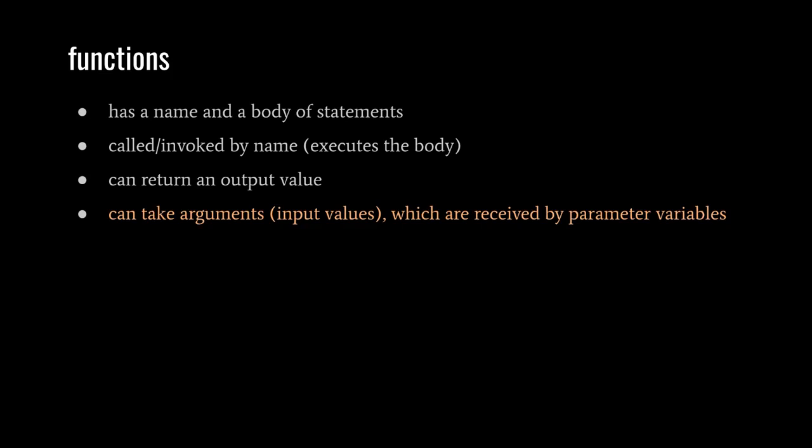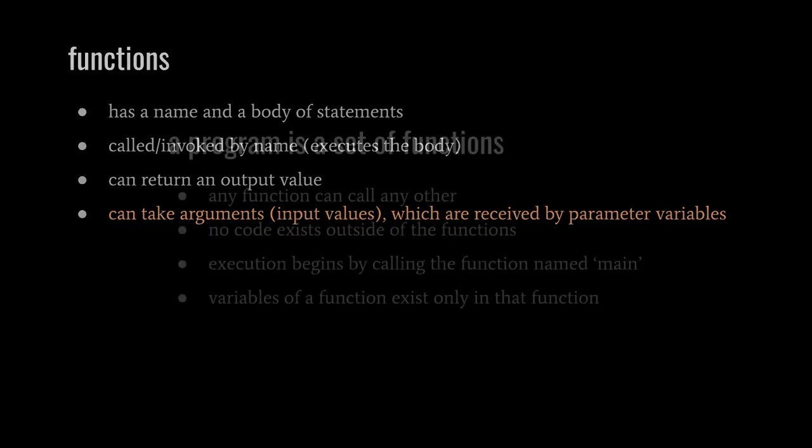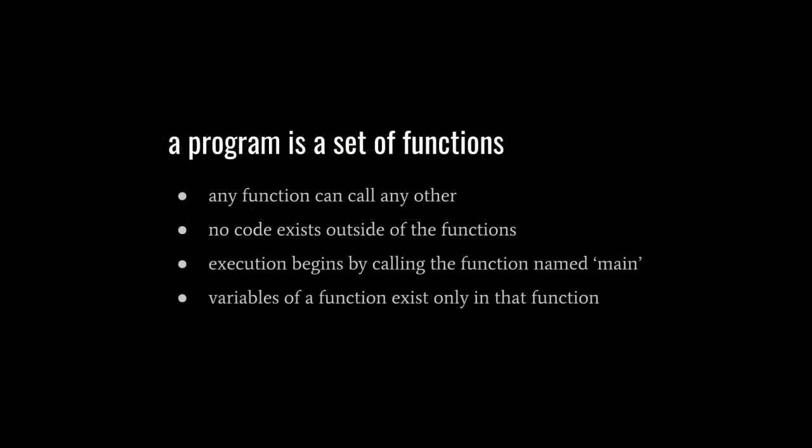Anyway, our functions can take input and return output, so in a sense they are like operations. A function is like an operation which we ourselves are defining in our code. Languages typically have only a few dozen built-in operations, but we can extend the set of operations by defining our own functions. In fact, in most languages, a program is effectively a set of functions. Any function can call any other, and there's no code, no statements that exist outside of the functions, and program execution begins by calling the function which is given the special name main. So a little strangely, your main function isn't necessarily written first in code, it could be at the end of the file, yet that is where execution begins. From there, from main, we can call any other function, and from those functions call other functions.